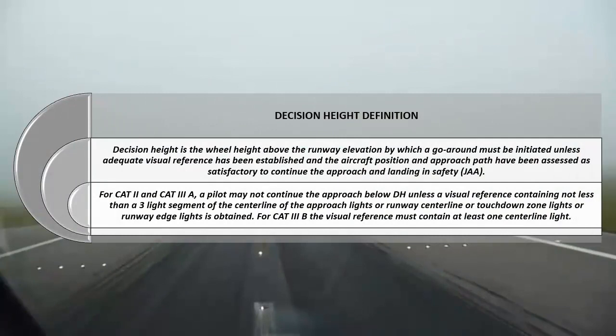Decision height is the wheel height above the runway elevation at which a go-around must be initiated unless adequate visual reference has been established and the aircraft position and approach path have been assessed as satisfactory to continue the approach and landing in safety (JAR). For CAT 2 and CAT 3A, a pilot may not continue the approach below decision height unless a visual reference containing not less than a three-light segment of the centerline of the approach lights, runway centerline, touchdown zone lights, or runway edge lights is obtained. For CAT 3B, the visual reference must contain at least one centerline light.